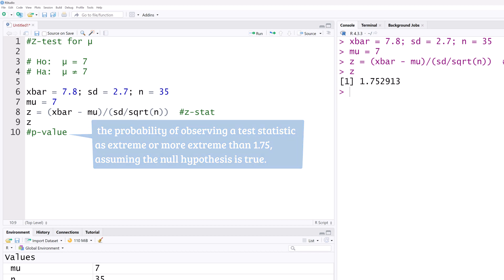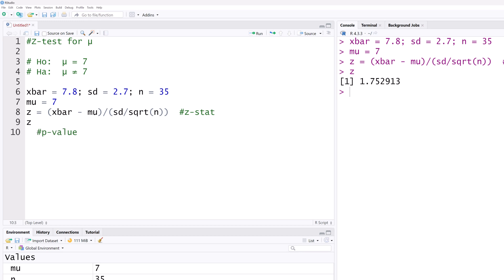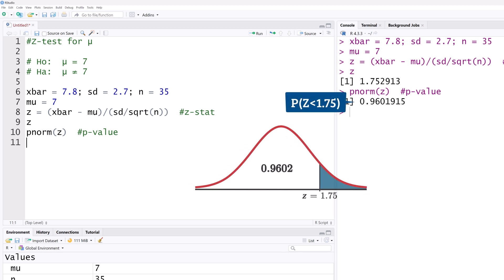The P value will be the area in the tails of the test statistic. We will use the PNORM function which by default produces the area below a Z score. On running it, we get the less than area of about 0.96.